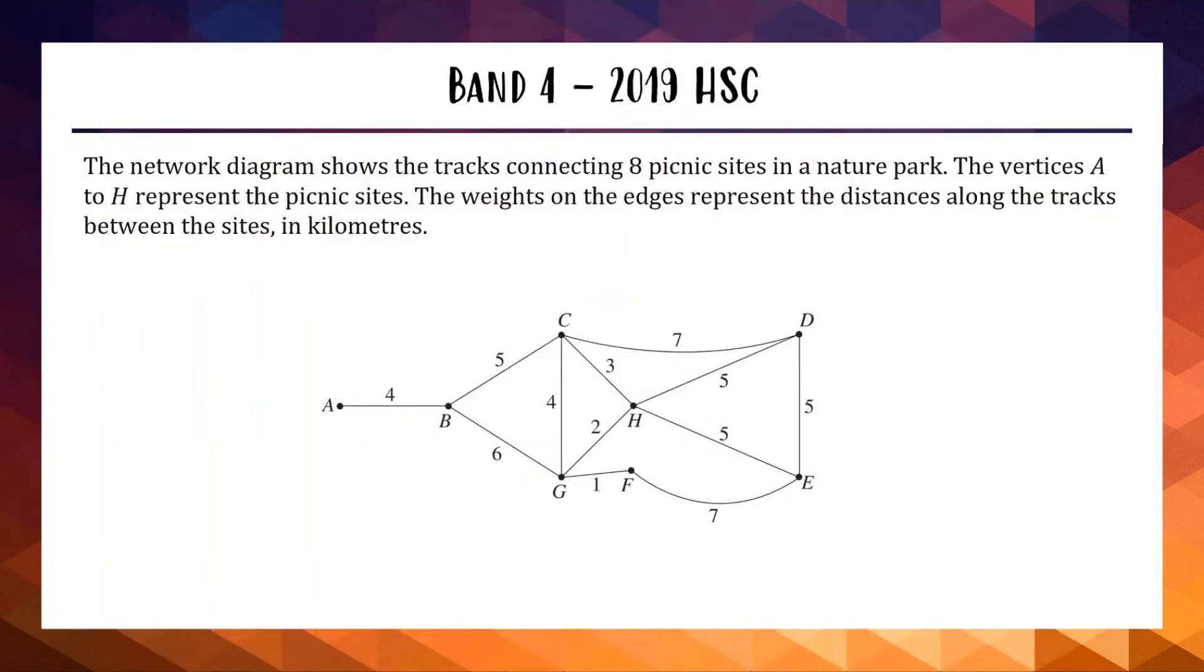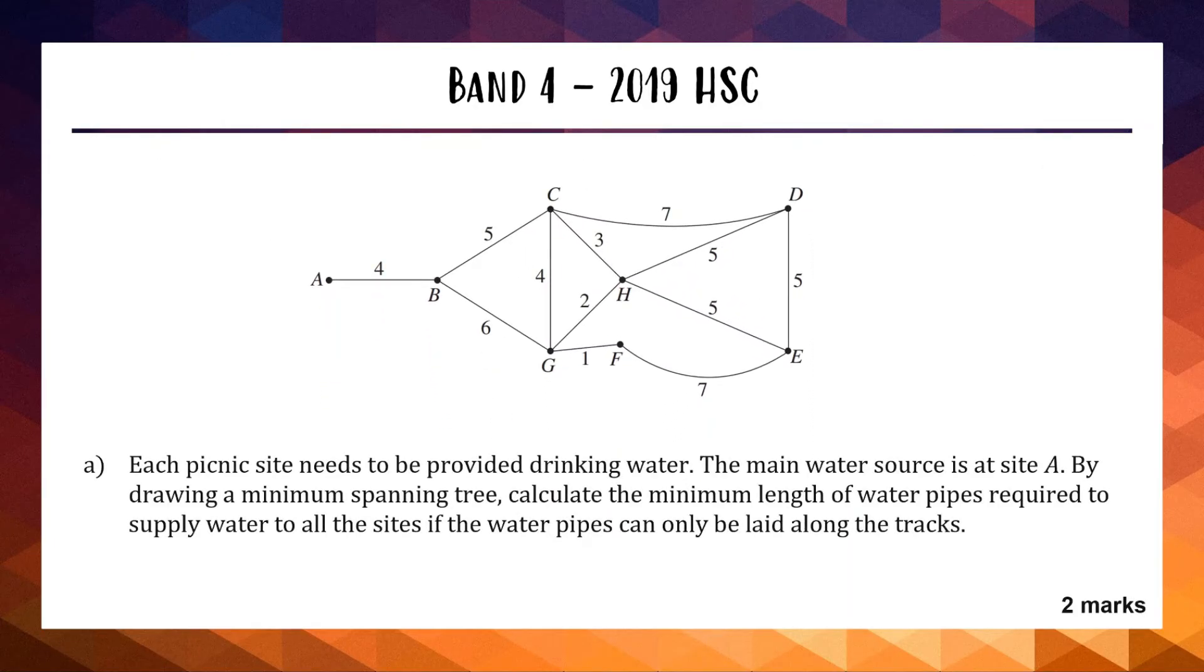On to the next question, the band 4, which is from the 2019 HSC exam paper. We have a network diagram showing the tracks connecting 8 picnic sites in a nature park. The vertices A to H represent the picnic sites. The weights on the edges represent the distances along the tracks between the sites in kilometers. Each picnic site needs to be provided drinking water. The main water source is at site A. By drawing a minimum spanning tree, calculate the minimum length of water pipes required to supply water to all of the sites.